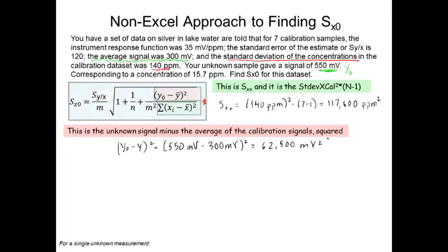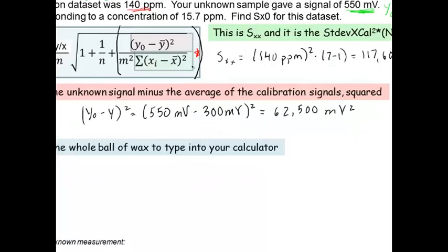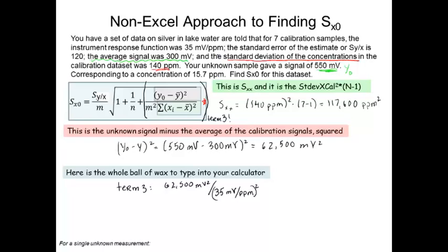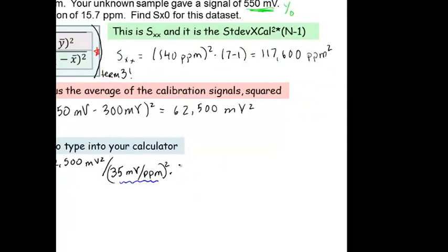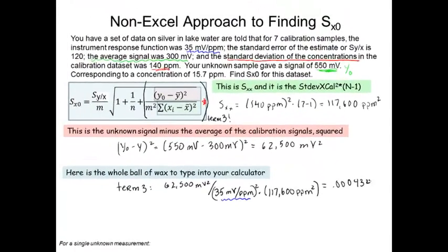Then finally, I'm going to go ahead and calculate the whole ball of wax. So how I usually do this is I calculate term three first. And what I mean by term three is all of this. This is called term three, and that's my own nomenclature. And so the first thing we're going to do is calculate term three. And that's going to be 62,500 millivolts squared divided by the slope quantity squared. And just to point out, there's our slope. Remember, that's the same as the instrument response function. And we're going to multiply that. Remember, we have the SXX on the bottom too. Now, if you look at your units, you'll notice everything happily cancels. So everything under that square root sign has no units. And I calculate here 0.000434 for term three.